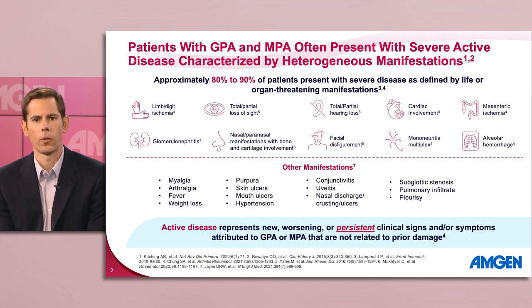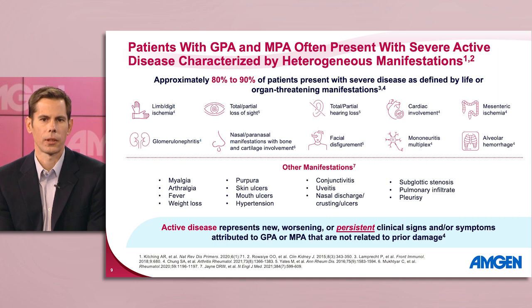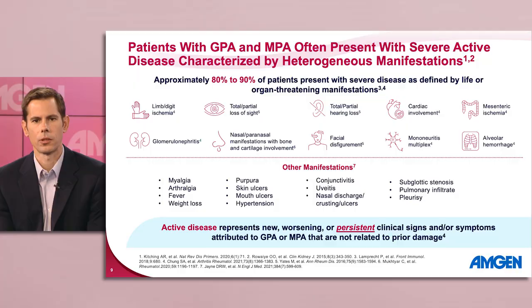These may appear before or alongside life or organ threatening manifestations as signs of active disease. Also, remember that active disease can represent both new, worsening, or persistent signs or symptoms attributed to GPA or MPA that are not related to prior disease damage. So, Dr. Villaforte, given what we know about the presentation of GPA and MPA, which should we consider during diagnosis?